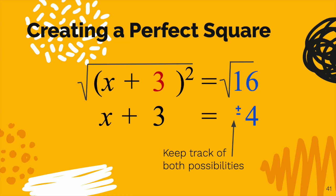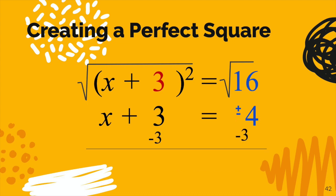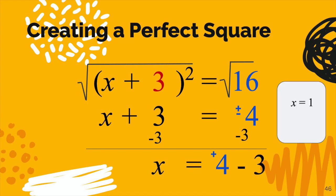From here, we solve the equation normally. We subtract 3 on both sides, and this is where the plus and minus comes in — we literally branch into two answers. Positive 4 minus 3 gives us 1, and the other option from the plus or minus: negative 4 minus 3 gives us our second answer, which is negative 7.